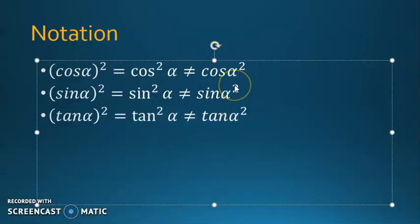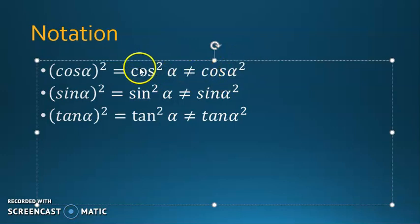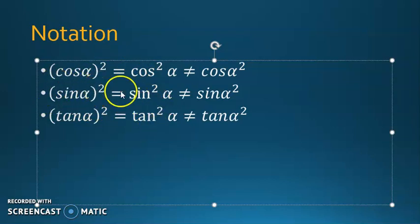First, let's give this notation. If you want to write cosine alpha all squared, it's also written as cosine squared of alpha — you put the squared after the cosine and before alpha — and it's read as cosine squared alpha. It's not equal to cosine of alpha squared, because that means alpha is squared, while cosine squared alpha means cosine alpha is all squared. Same for sine alpha and tangent alpha.